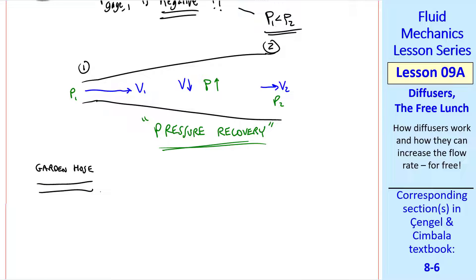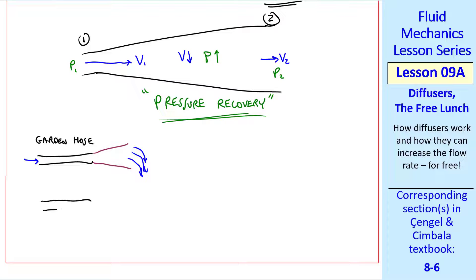One final comment. It's not always wise to add a diffuser. Suppose you have a garden hose and you're washing your car. Adding a diffuser would make the flow go a little faster, but it would just dribble out and not have much of a spray. In a case like this, it's actually better to add a nozzle, which is the opposite of a diffuser. This makes the flow come out really fast and is better for washing your car.